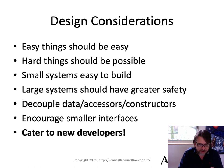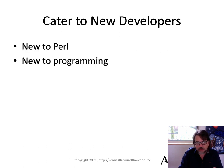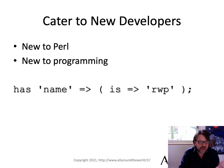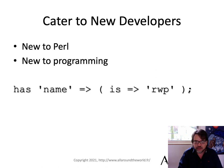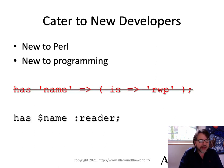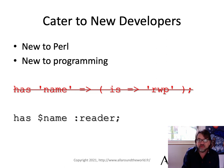We also want to cater to new developers — and I don't just mean new to Perl, I mean new to programming. We need to have something easy. When you look at a line from Moo like 'has name is RWP' — what the heck is RWP? It means read-write-protected. What does that mean? In Cor, 'has name' and it has a reader. Once you understand Cor, it becomes very simple. You don't have to remember anything. It's not hard to figure out what it does.